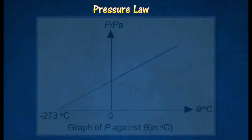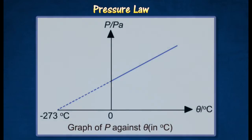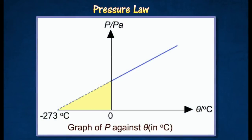The graph shows that the gas pressure increases uniformly with temperature. If the graph is extrapolated backwards, it will cut the temperature axis at negative 273 degrees Celsius, means this is the lowest temperature possible for a gas, and thus known as absolute zero.